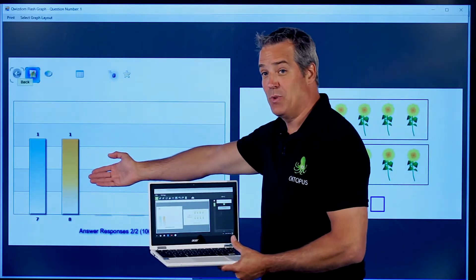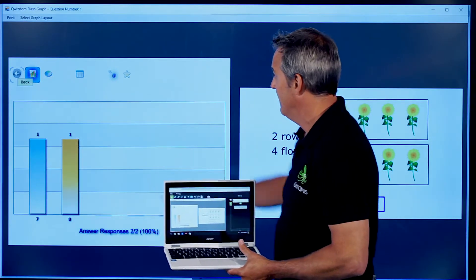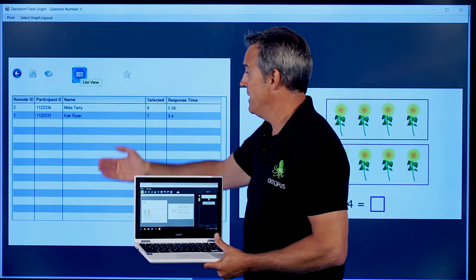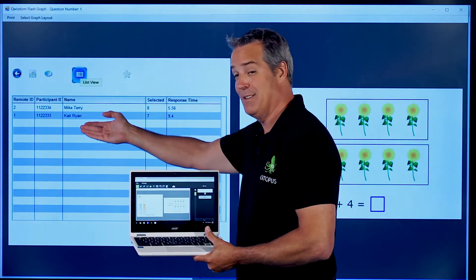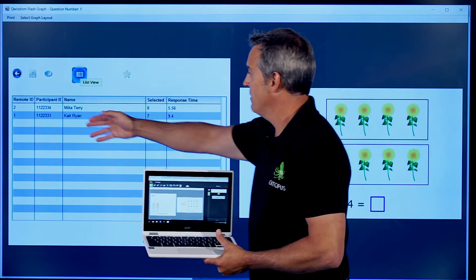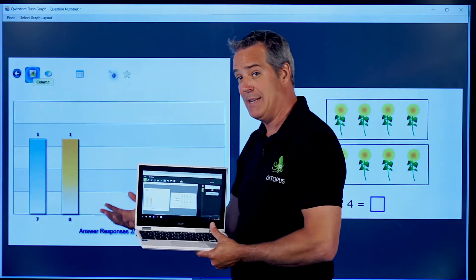So here I had one student that answered with seven, one student that answered with eight. So I can bring up that chart data and it's tracking all the data behind the scenes. I know that Mike got it wrong, that Kate did not get it or Mike got it right, Kate did not get it right. So it's tracking their time, it's tracking how my class performs and I can use that in reporting data afterwards.